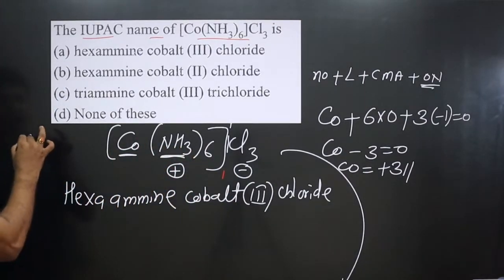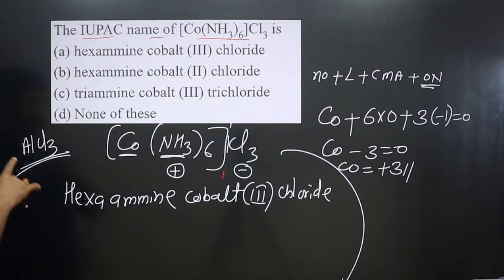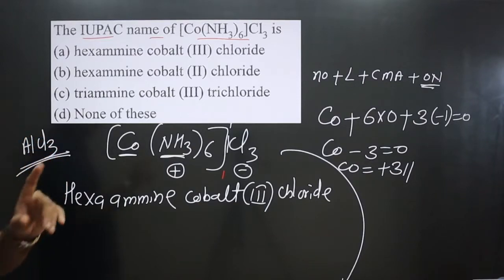Like if I mention aluminium, we do not say aluminium trichloride. We say only aluminium chloride. 3 we are getting by balancing the charge of cationic as well as anionic part.